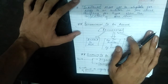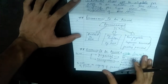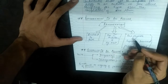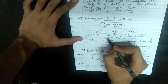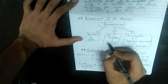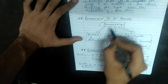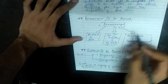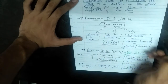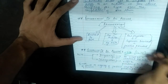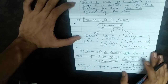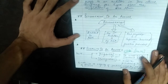Now coming to remuneration of an auditor. Remuneration is decided at the Annual General Meeting. For the first auditor, remuneration is decided by the Board of Directors — this includes fees payable, expenses incurred, and facilities provided to the auditor.